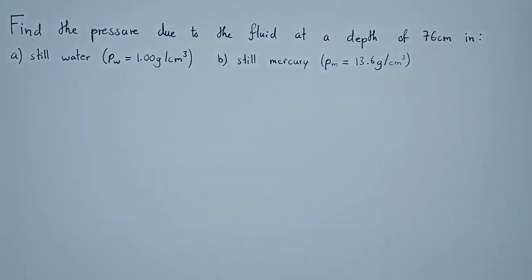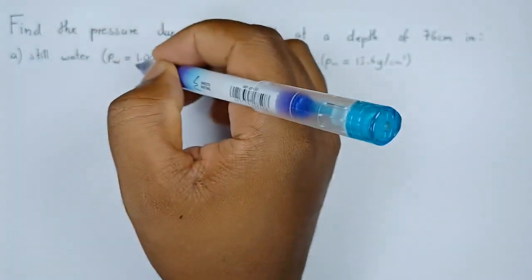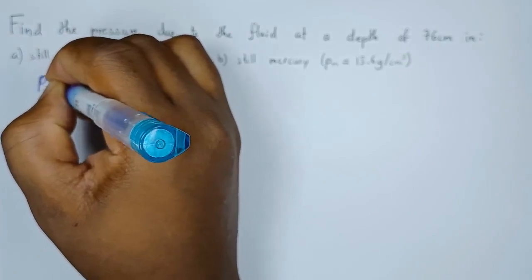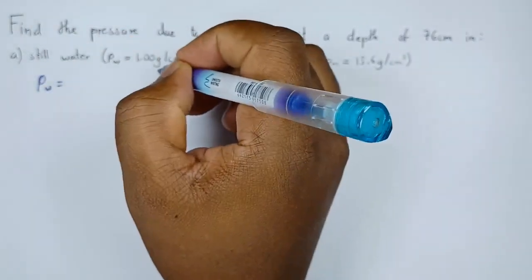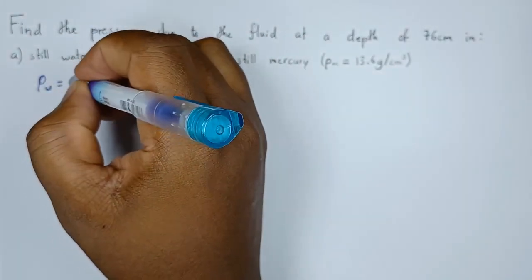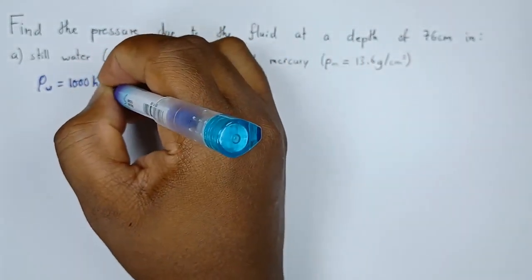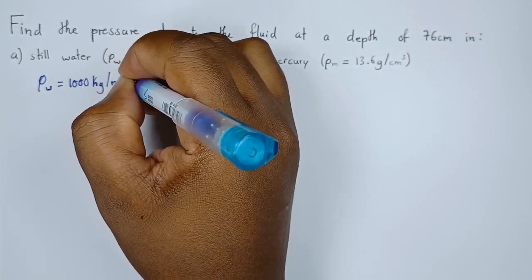To start with we need to convert the density into kilograms per cubic meters. The density for water, we multiply by 1000. The density for water will become 1000 kg per cubic meter.